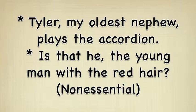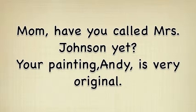'Tyler, my oldest nephew, plays the accordion' is an example of the first rule. 'My oldest nephew' is set off by commas because it is not necessarily important to know in the sentence. Another example is 'Is that he, the young man with the red hair?' Both are examples of non-essentials. The second rule is used to address certain people or things in the sentence, such as 'Mom, have you called Miss Johnson yet?' and 'Your painting, Andy, is very original.'